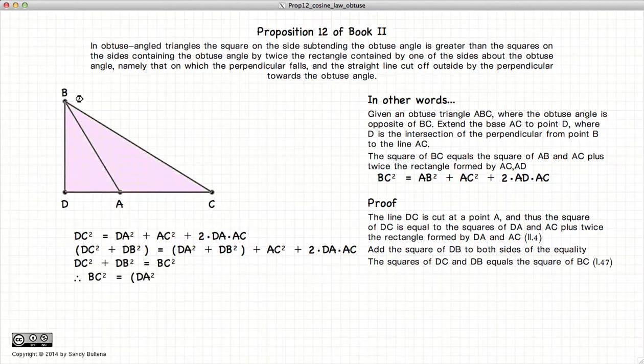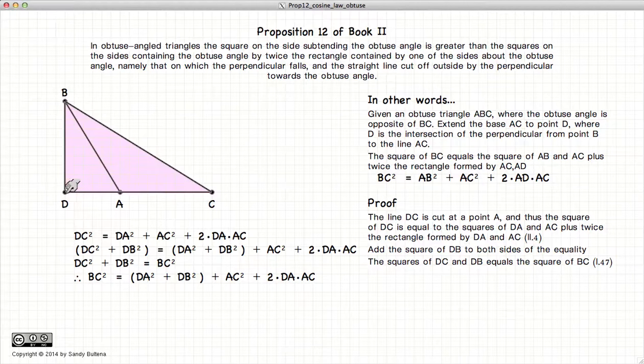Well, let's look at the triangle BDC. BD squared plus DC squared is equal to BC squared. So if we take this part of the equation and substitute BC squared, the equation is still true.